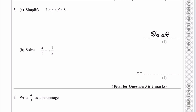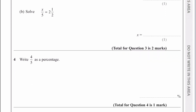Part B of the same question says solve this. It's a little bit unusual and tricky, but what I'm going to do is convert the second one to a top-heavy fraction, so I get X over 5 equals 5 over 2. Then it's just a case of cross-multiplying: 5 times 5 is 25, and 2 times X is 2X. So 2X equals 25, and therefore if I divide through by 2, I get X equals 12.5, which is the answer to part B.